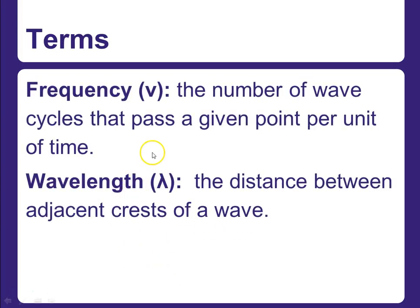Some more terms. When we're talking about light — you may not have gotten the notes for this yet depending on which period you see me — we're going to talk about frequency, which uses the Greek letter nu. That's the number of wave cycles that pass a given point per unit of time, so cycles per second. We're also going to talk about wavelength, which uses the Greek letter lambda, defined as the distance between adjacent crests of a wave.